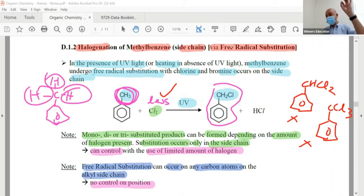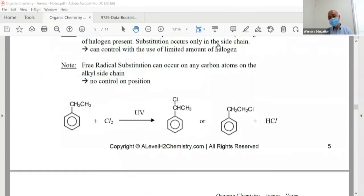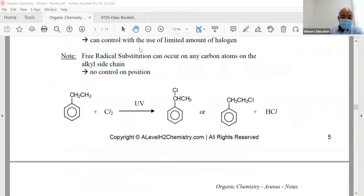But it's an issue when this chain gets longer. So let me draw it out. In FRS, if there is a longer chain, this hydrogen will be replaced by chlorine, so you get this product. But it could be this carbon, and therefore you get a different product here.